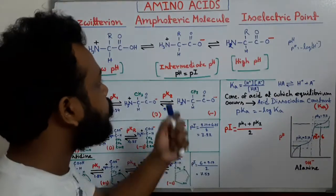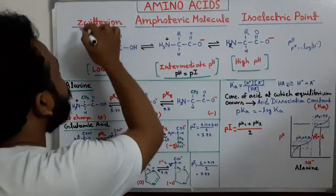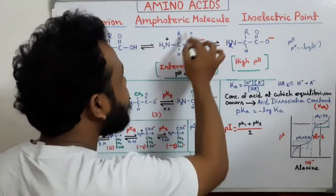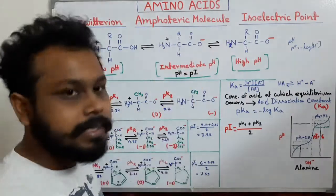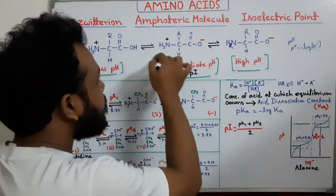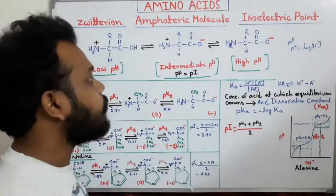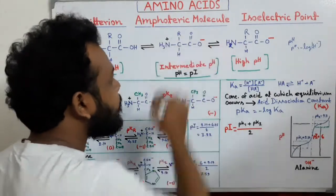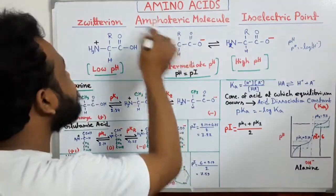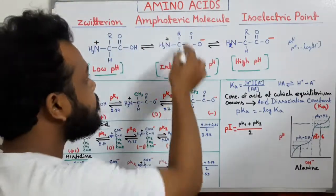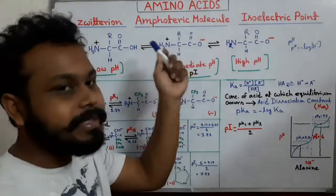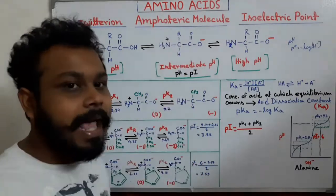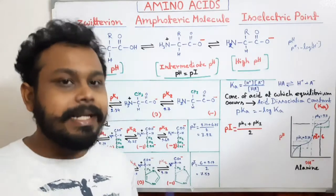Now we will understand what the zwitterion structure is. We can see that one positive group and one negative group is present in this structure, making it a dipolar ion. Any molecule that contains a positive charge and a negative charge is known as a zwitterion. This structure of the amino acid is known as its zwitterionic structure.